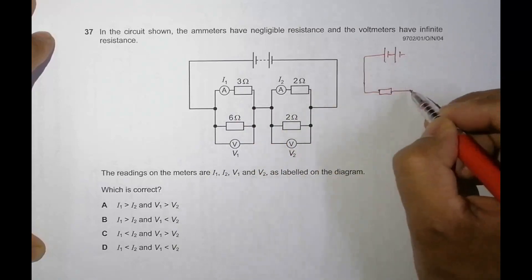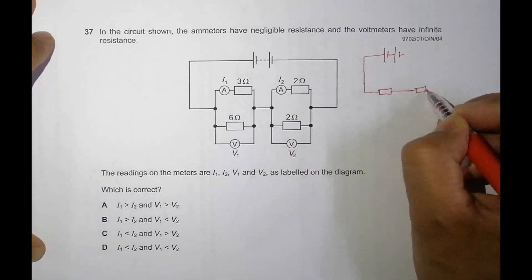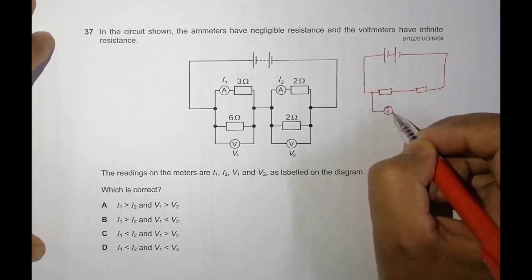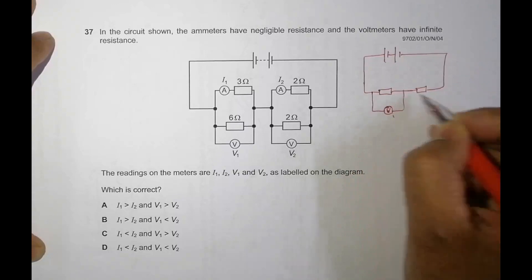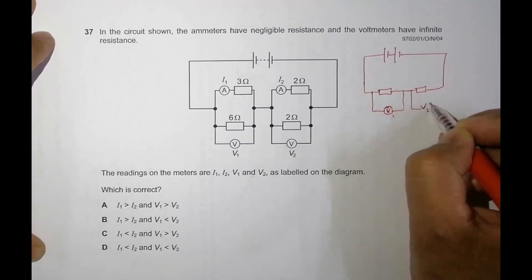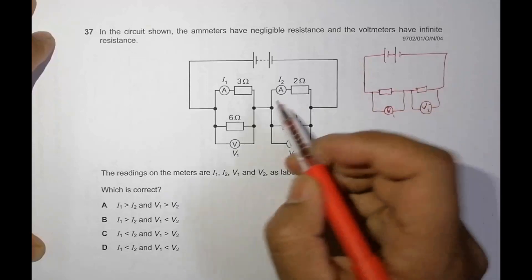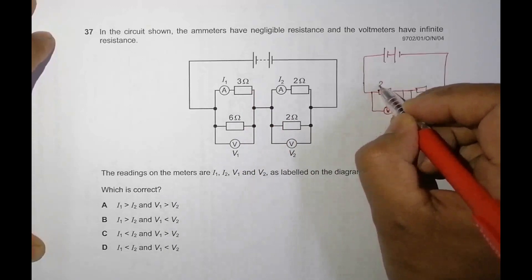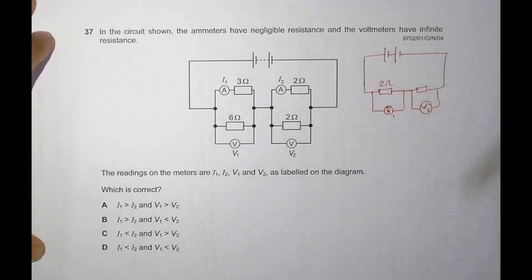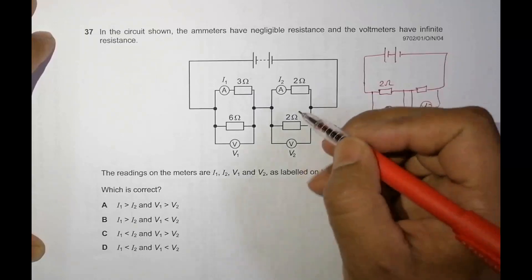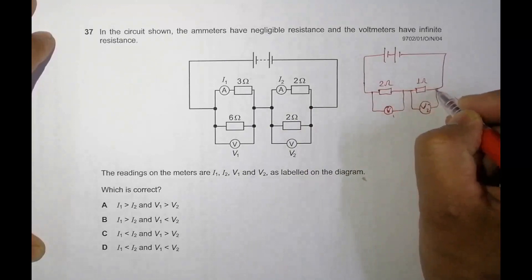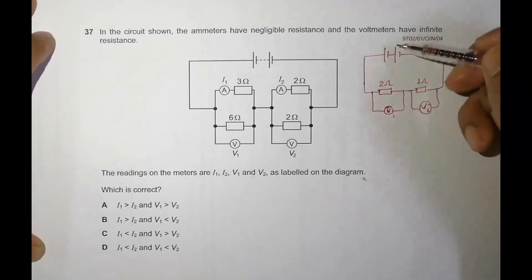The combination of these two gives us a single resistance as well. I'm calculating the voltage readings V1 and V2. The combination of 3 ohm and 6 ohm in parallel gives 2 ohm. Similarly, the combination of 2 ohm and 2 ohm in parallel gives 1 ohm.